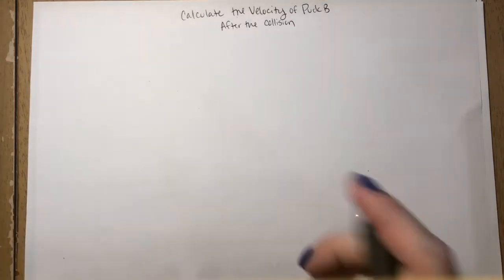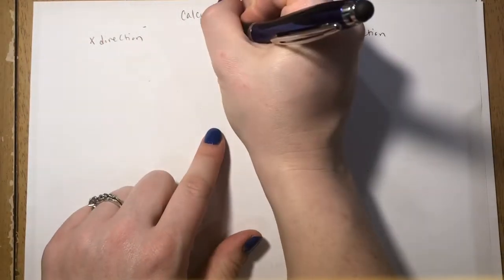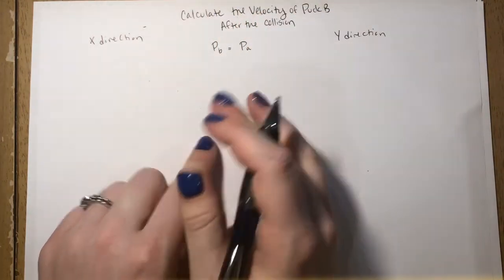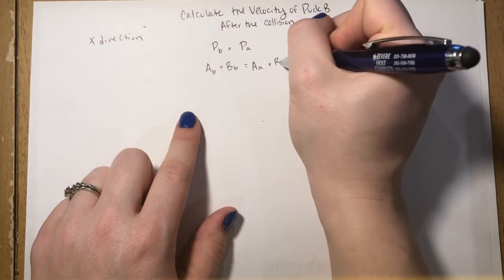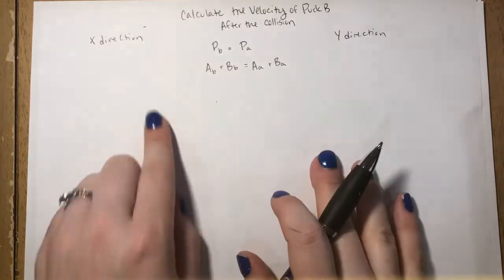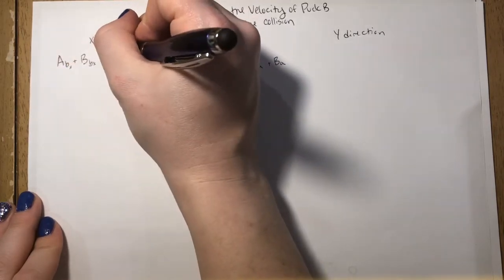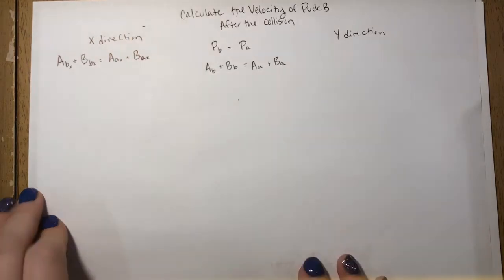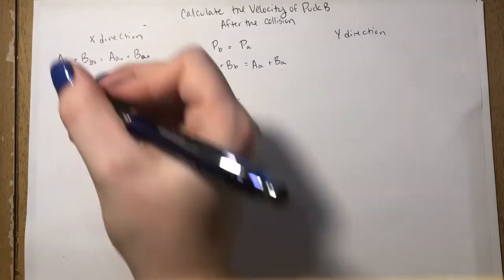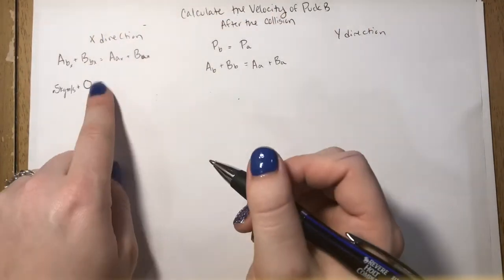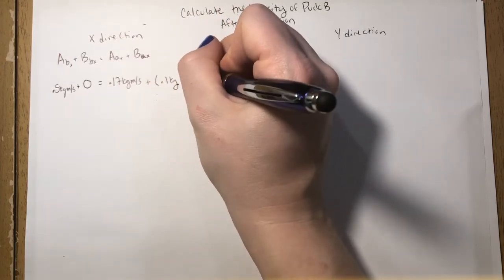Now let's calculate the velocity of puck B after the collision. We have to separate our x and y directions. Don't forget that momentum beforehand equals momentum after. So if we write this out, it's going to be puck A beforehand plus puck B beforehand equals puck A after plus puck B after. We're going to take this equation and put it in the x and y directions. We know that B before was 0 because it's at rest, and A before is 0.5 kilograms meters per second. A after is 0.17 kilograms meters per second, and puck B after is 0.1 kilograms times the velocity times the cosine of the angle.